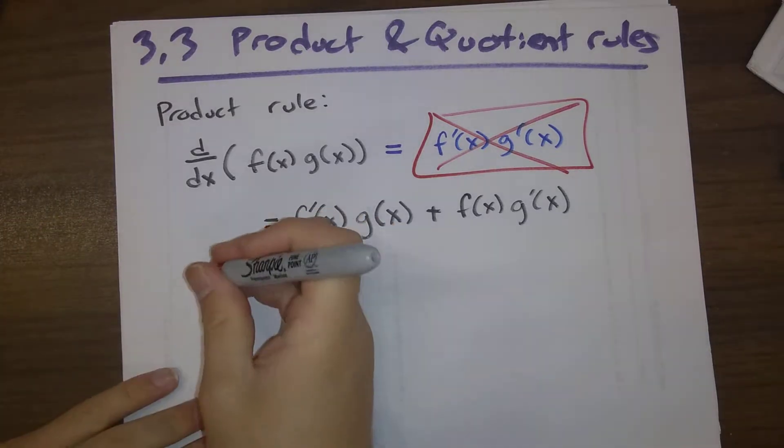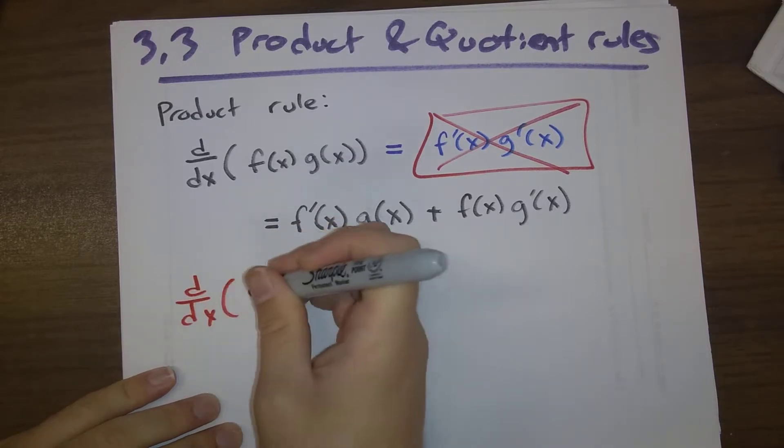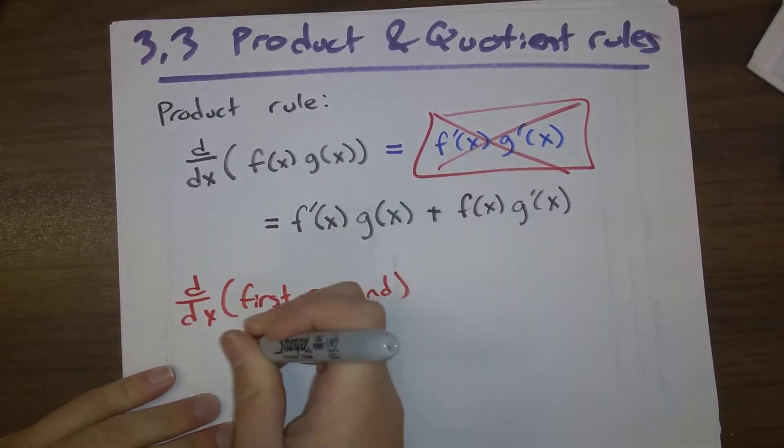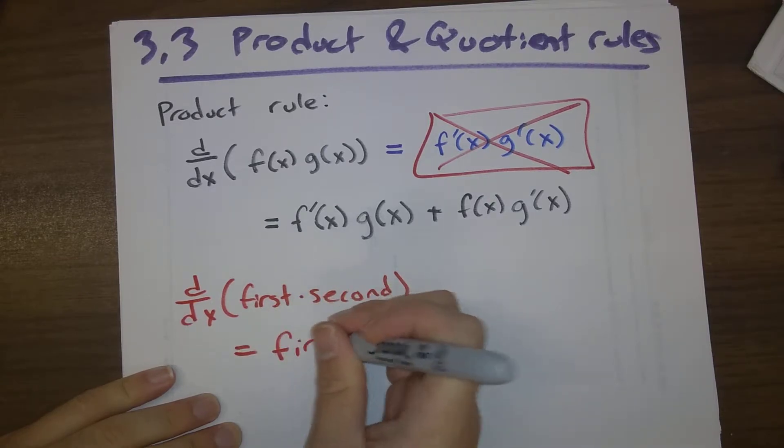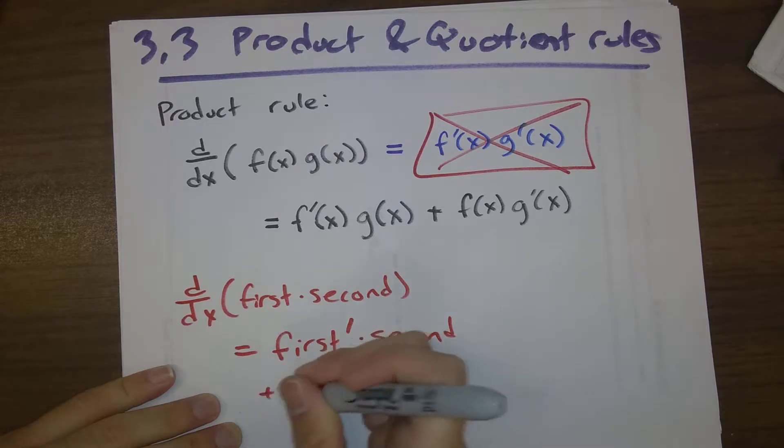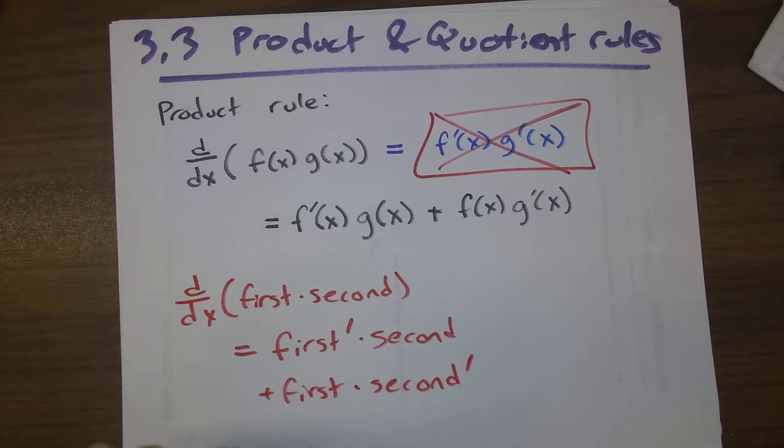In words, the derivative of first times second is the derivative of the first times the second plus the first times the derivative of the second.